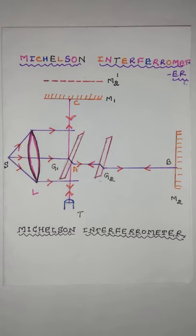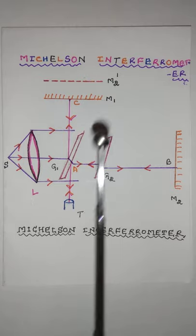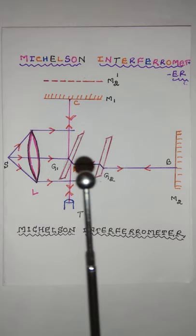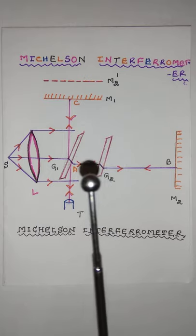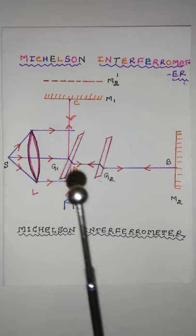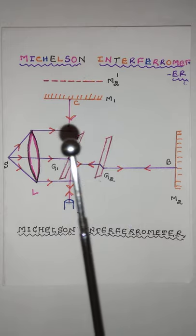Suppose if M1 and M2 are not exactly perpendicular, then a wedge-shaped air film is formed between M1 and M2 dash. Then the fringes become practically straight. Therefore, the fringes are localized in the air film itself, thereby producing straight fringes.